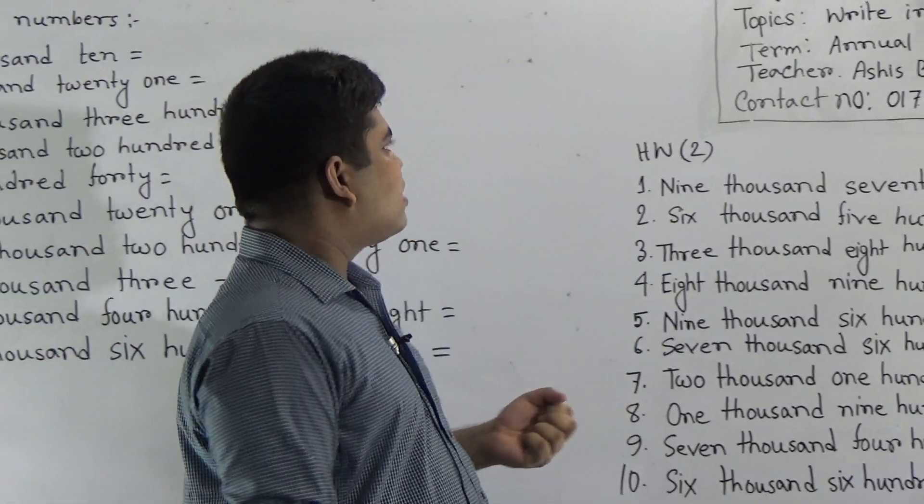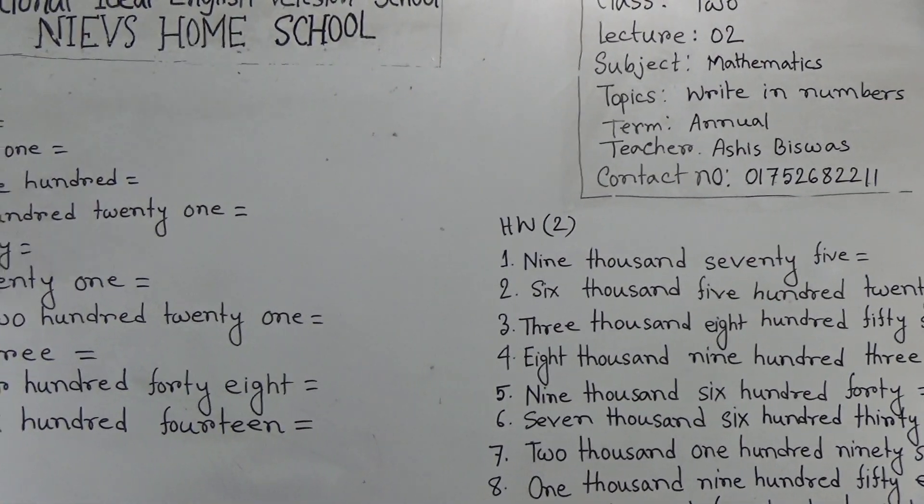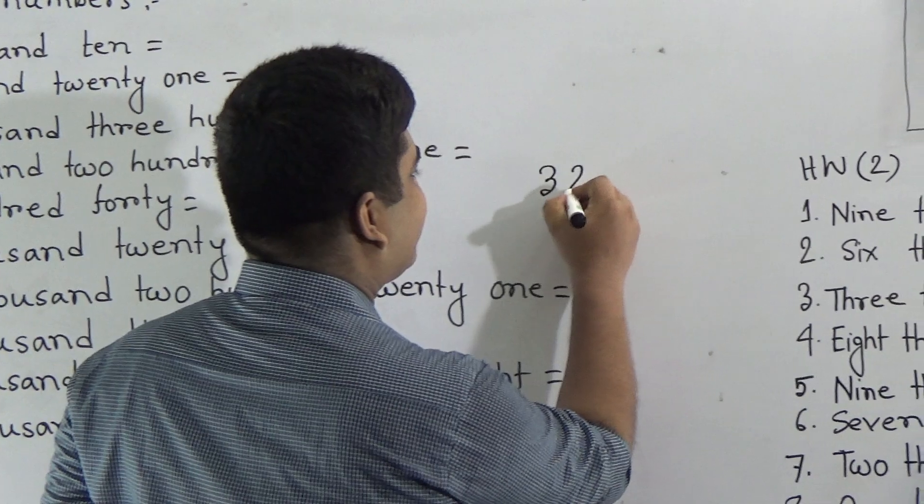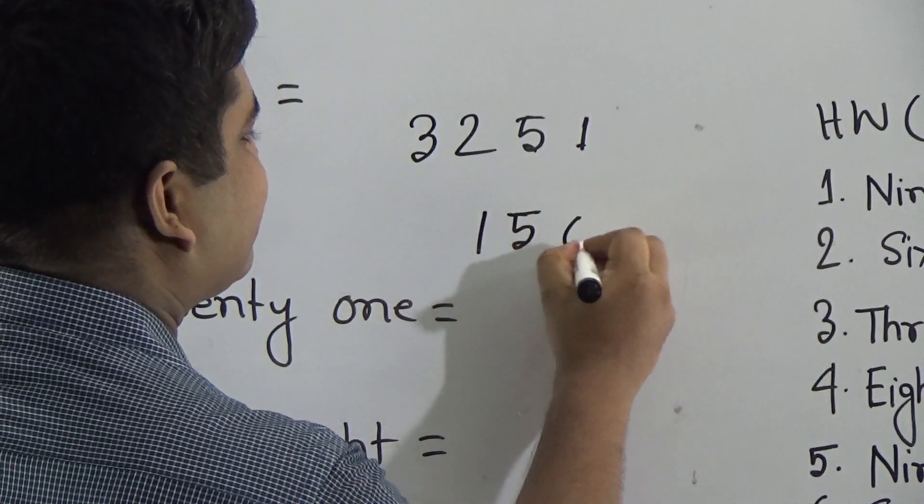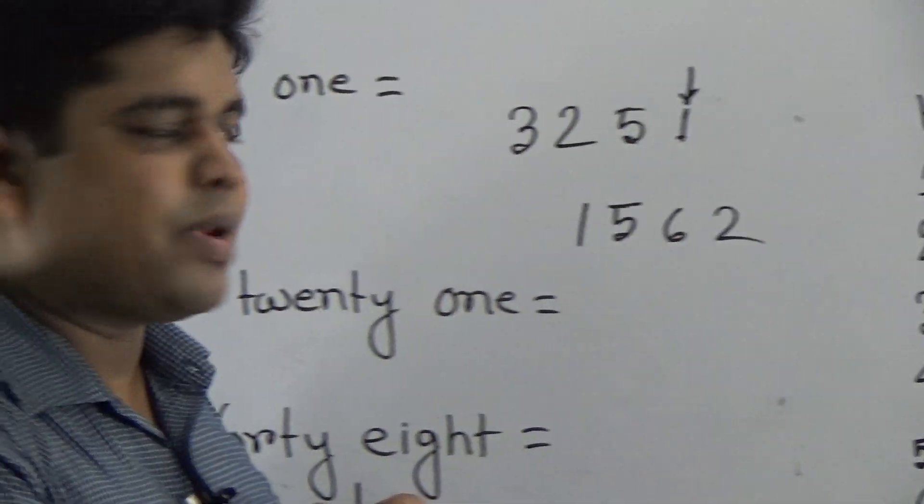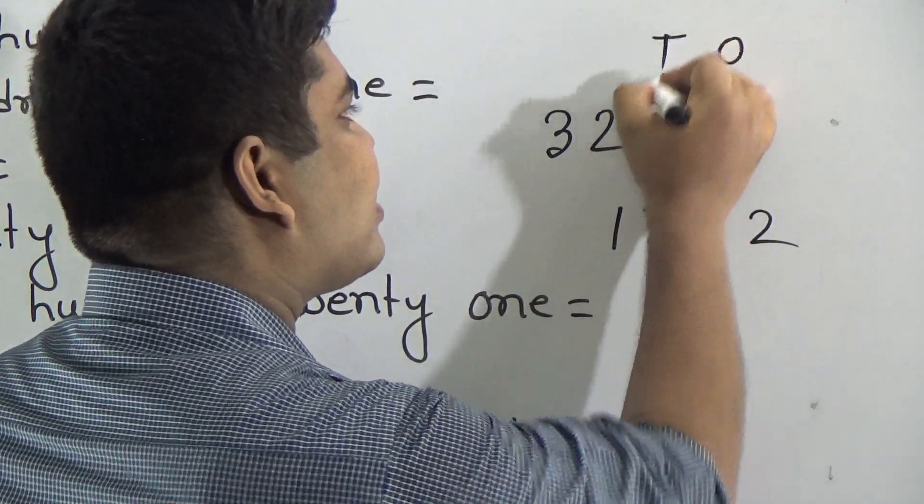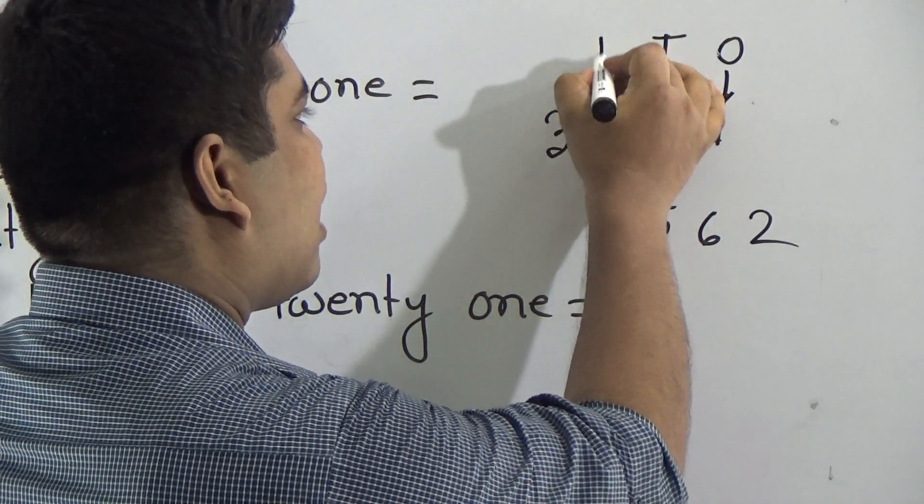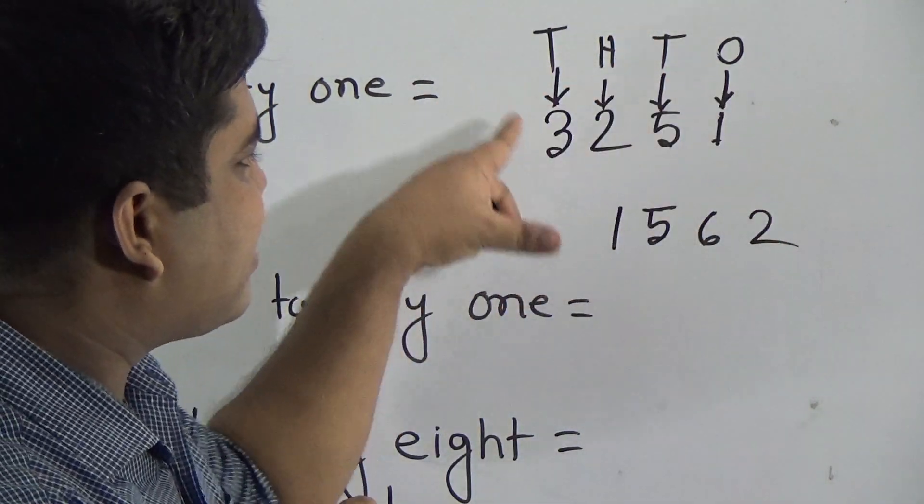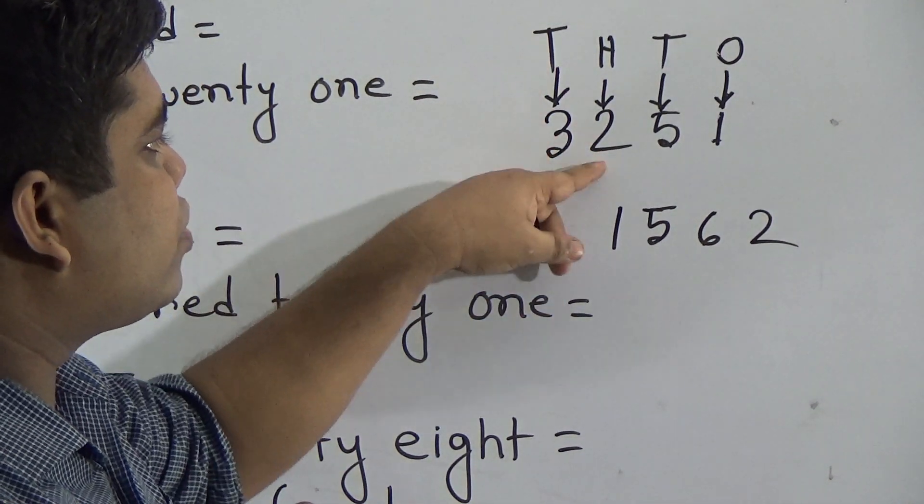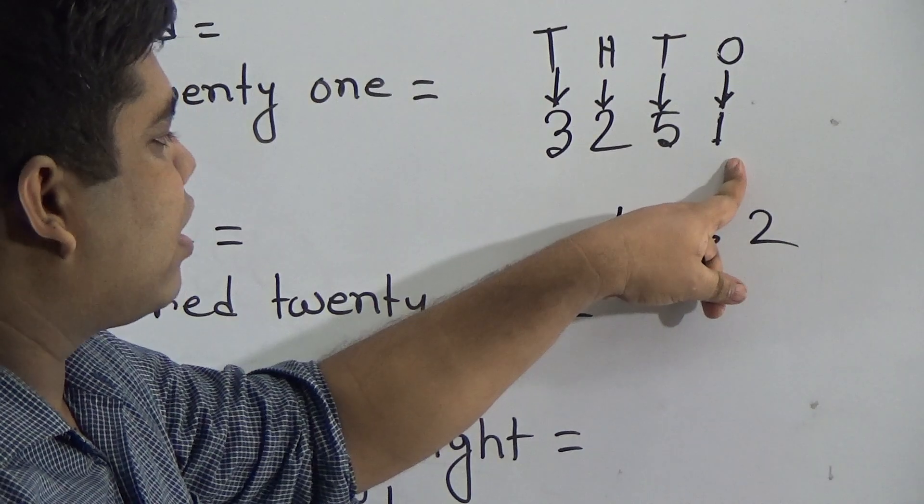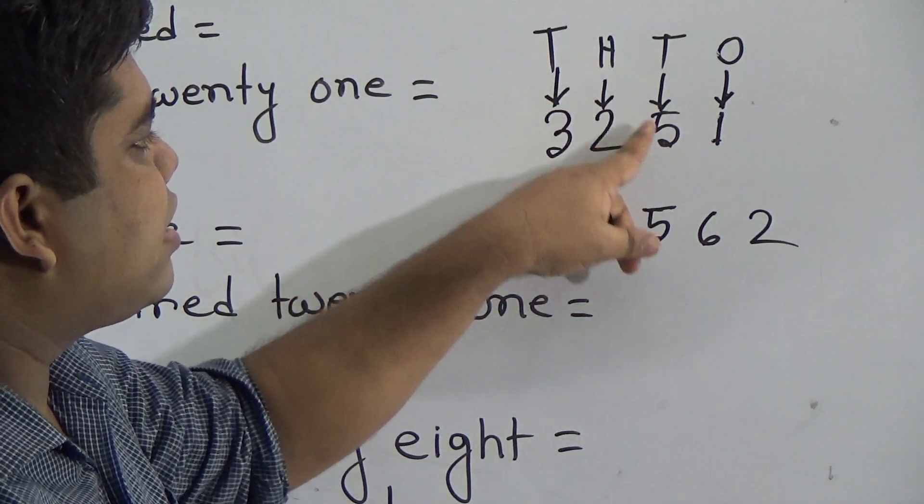Let us start our class. The topic's name of our class is Write in Numbers. Before starting to our class, please give an example just like 3251 and 1562. My dear students, please notice 1 is in 1's place, 5 is in 10's place, 2 is in 100's place and 3 is in 1000's place. For this reason, we read this number as 3251.